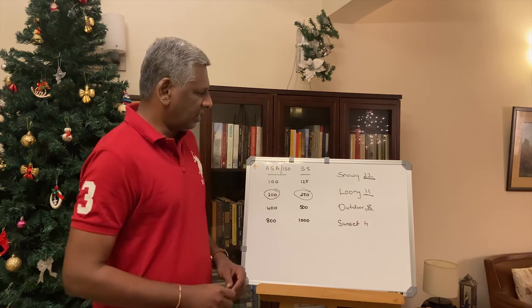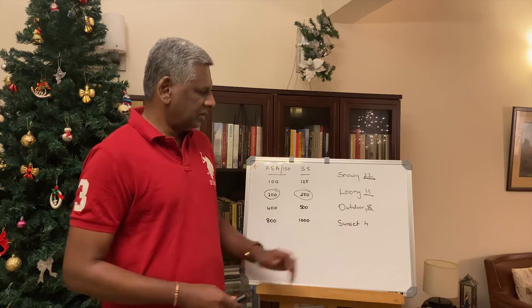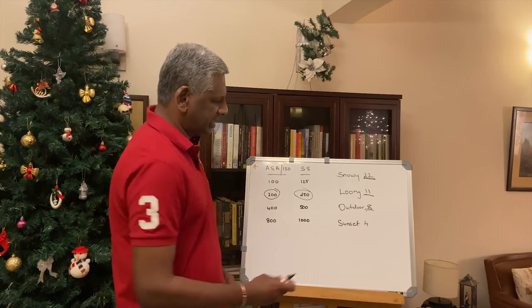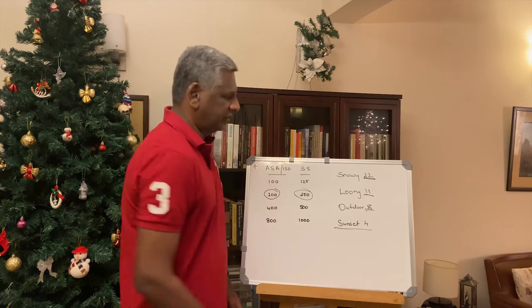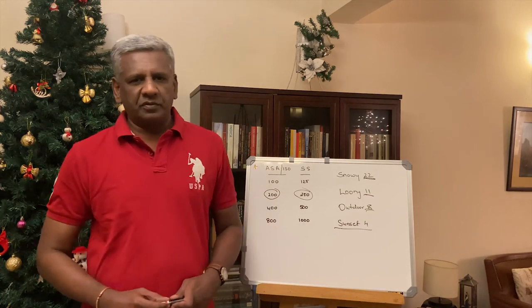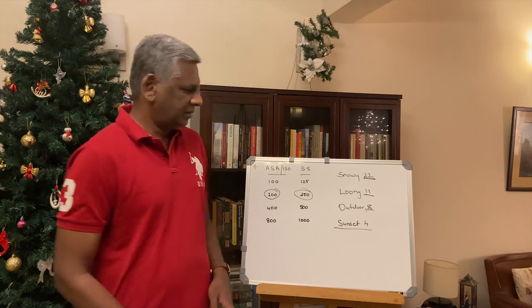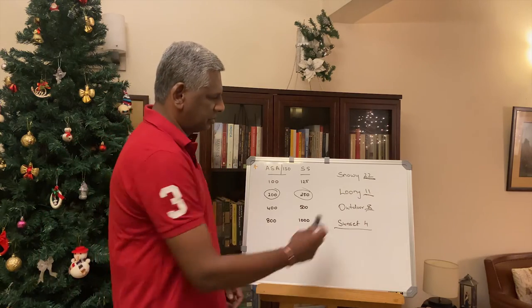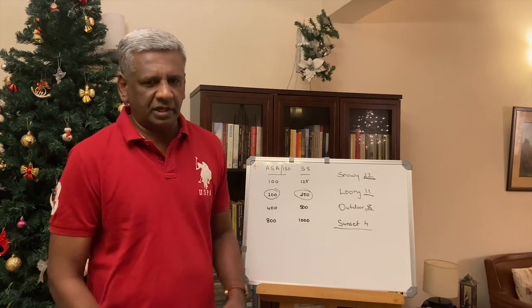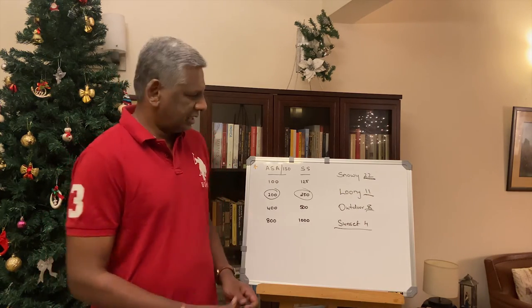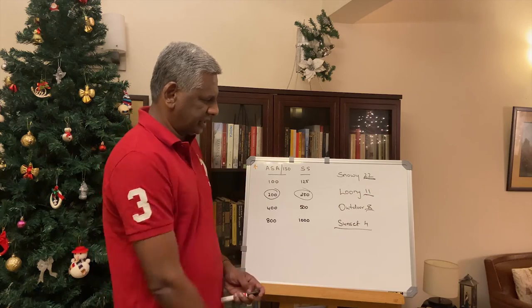The last rule is known as the Sunset 4. If there is a sunset and you want to photograph it, choose an aperture value of 4 — that is the safest choice for a sunset.